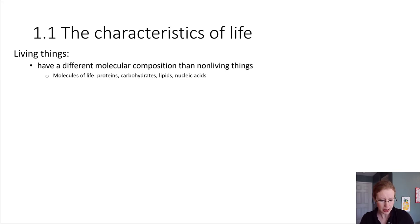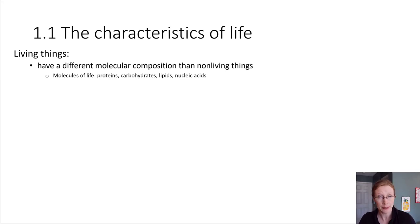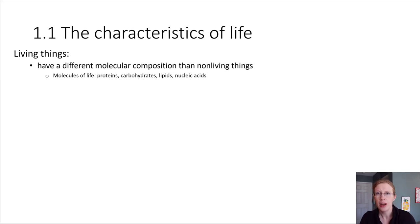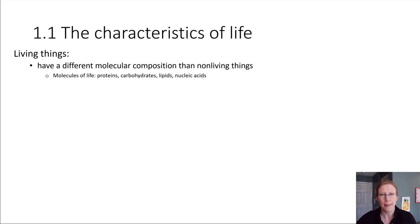There are four major types of biological molecules, and we will be learning about them this semester. These four different types include proteins, carbohydrates, lipids, and nucleic acids. Nucleic acids include things like DNA, which is a very good molecule for storing information and allows living things to reproduce from one generation to the next. That's one thing — just having a particular molecular makeup.